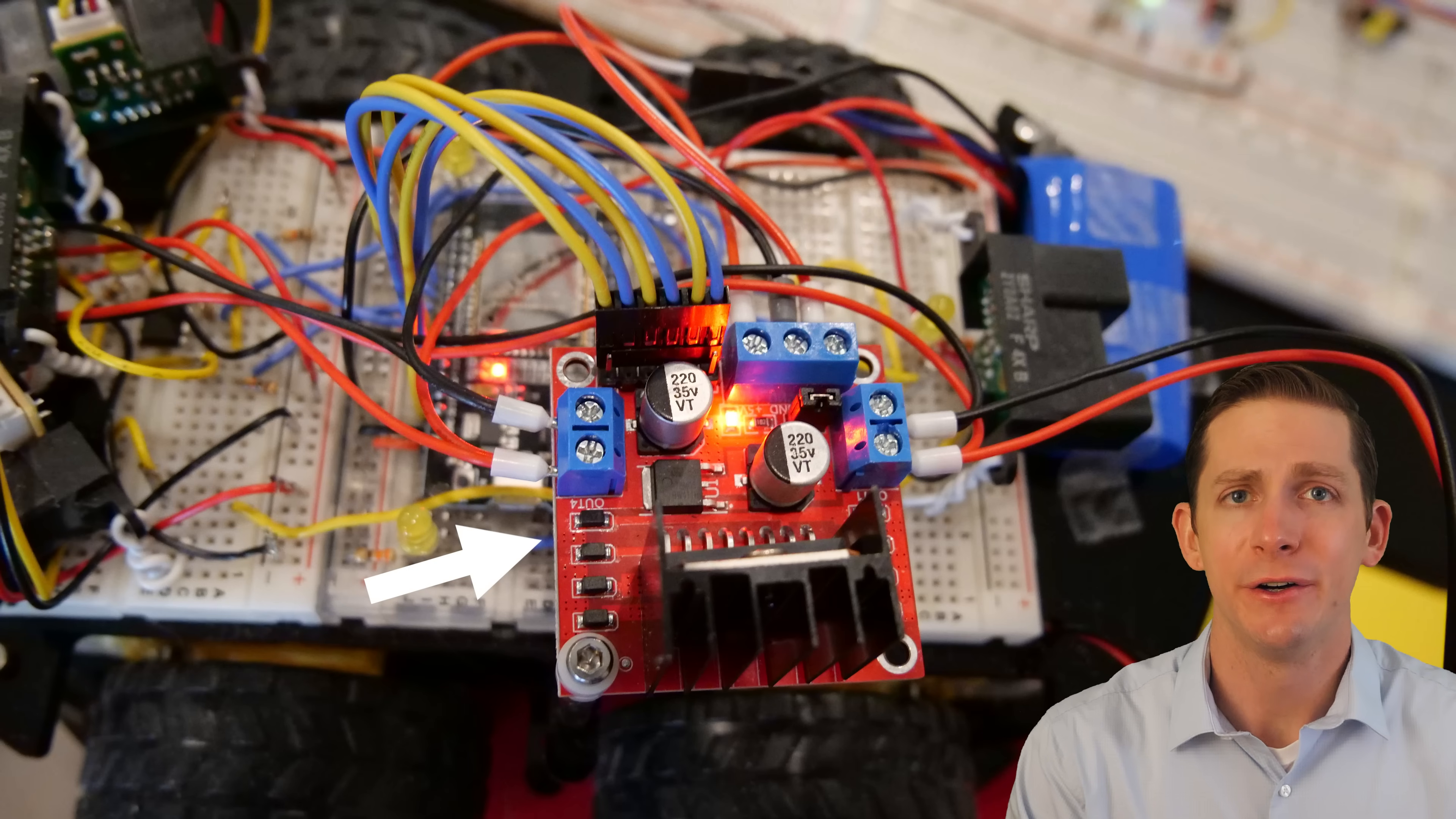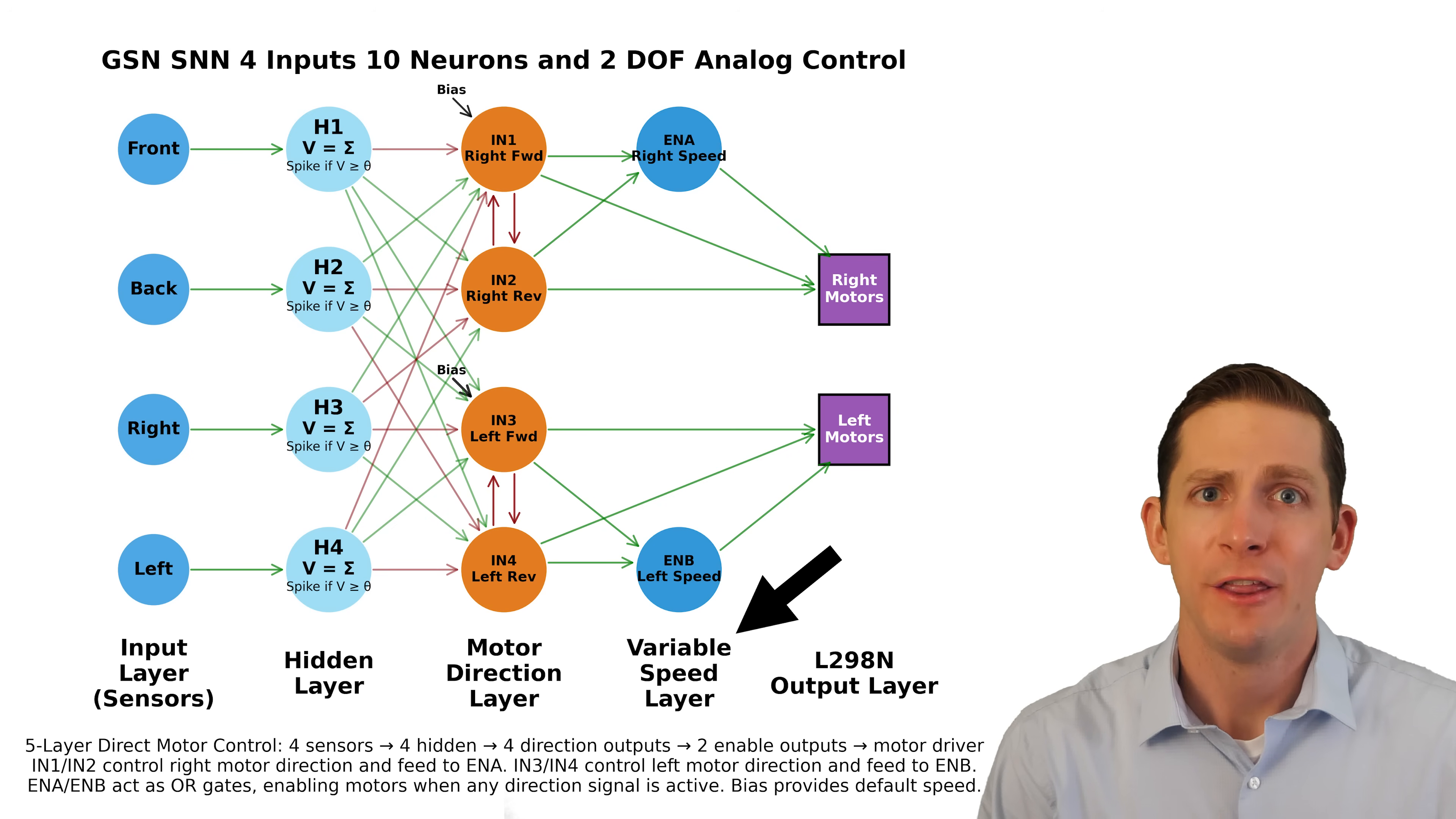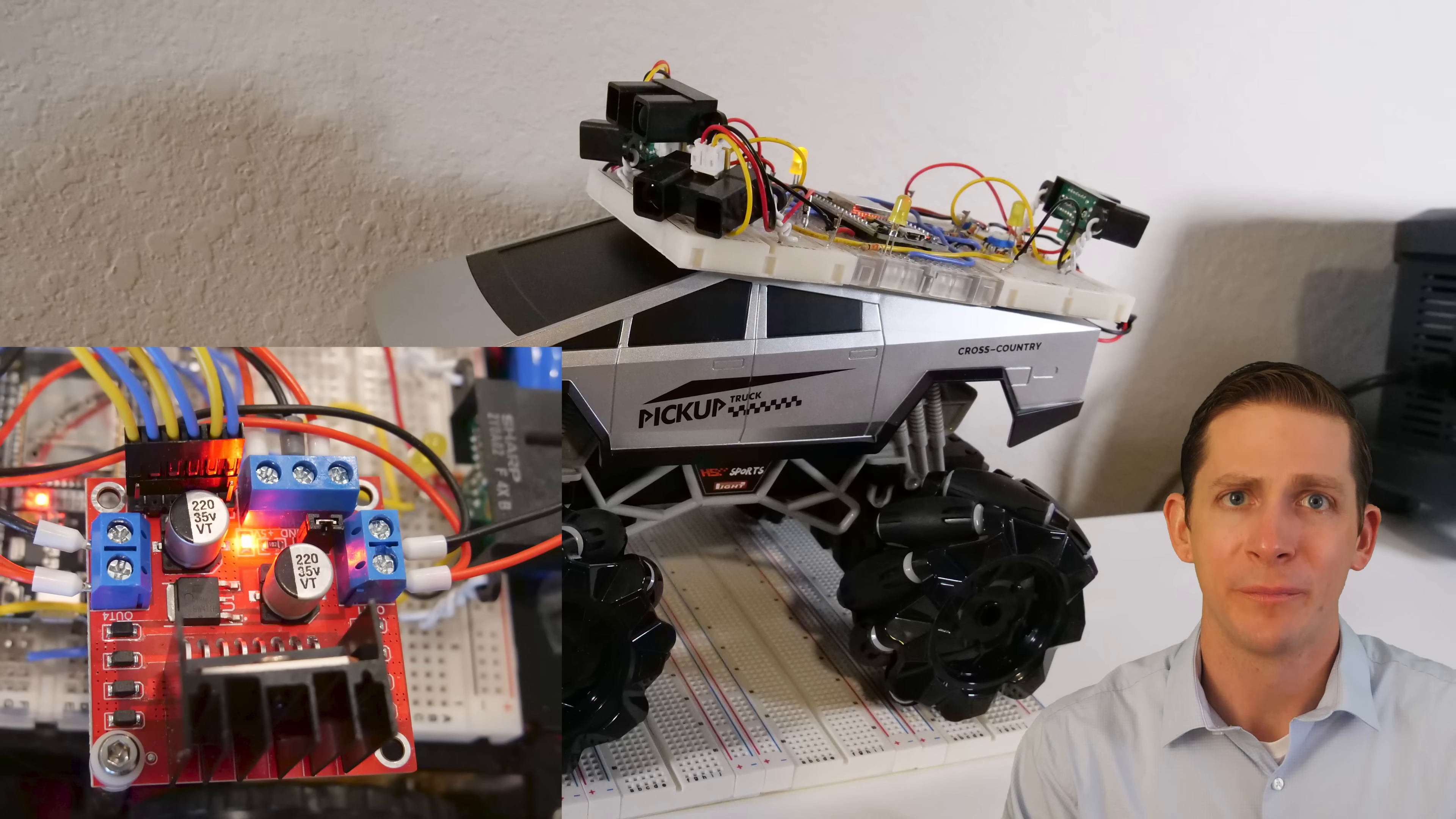I used a L298N motor driver module to access the motors directly. So this design can be easily used on most small vehicles that use a skid steer control. Since the output is analog, the vehicle has much smoother control. I could easily wire the motors of the RC truck into the motor controller, and it would almost be a plug and play design change.